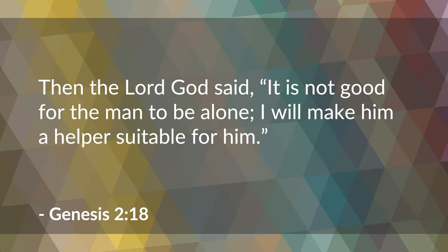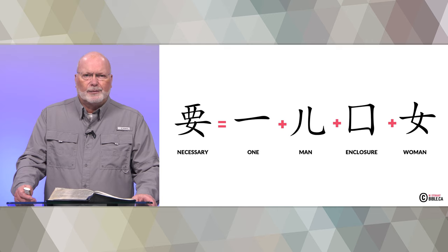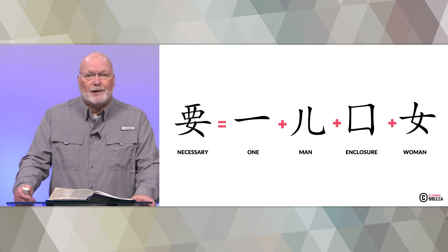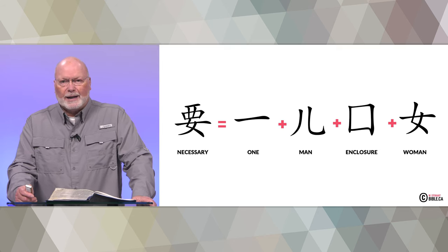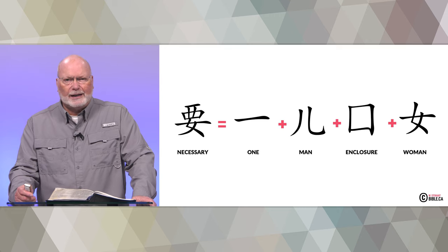From Genesis chapter 2 verse 18, the Chinese character for 'necessary' is created by combining four other characters: the hash mark representing 'one,' the character for 'man,' an enclosure, and a character representing 'woman.' So we've got 'necessary' being one man in a garden and a woman. God looked at man being alone and said, 'It's not good for the man to be alone — something else is necessary.' He created the woman, and that completed the arrangement, completed the family, and made the first marriage.